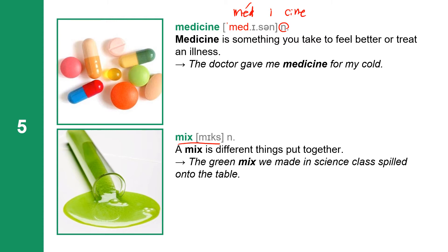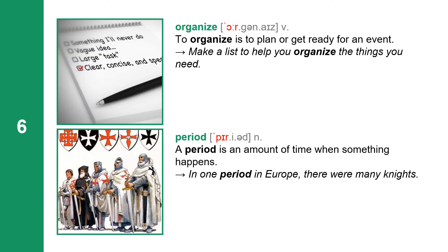Next one: mix. Mix is a noun. A mix is different things put together. The green mix we made in science class spilled onto the table.